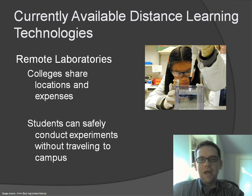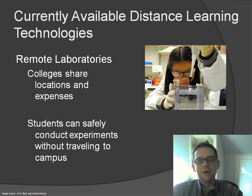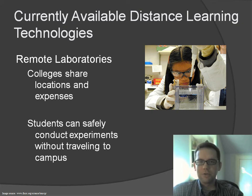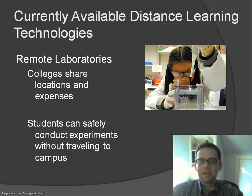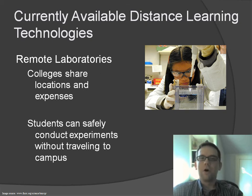Some colleges have decided to share their resources for things such as laboratories. If you have students who are spread out in various geographic locations, they can share research laboratory space to do courses such as chemistry or biology. The students benefit from having access to these facilities, and the colleges get to share the resources and the expense. This helps open access issues with online learning.